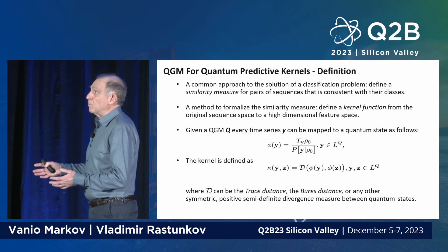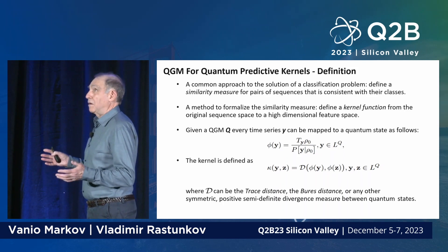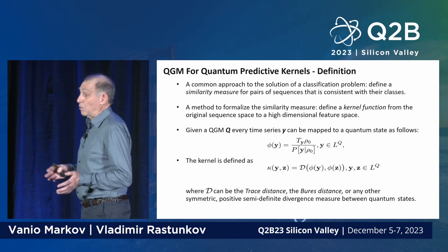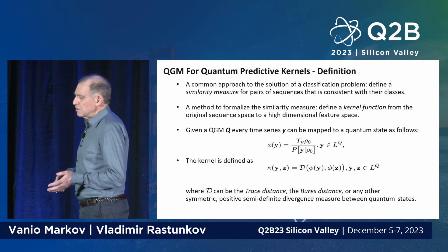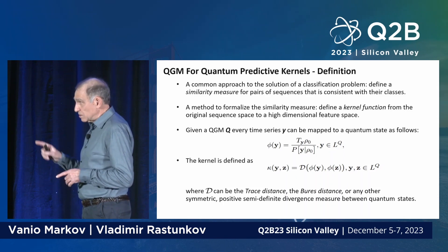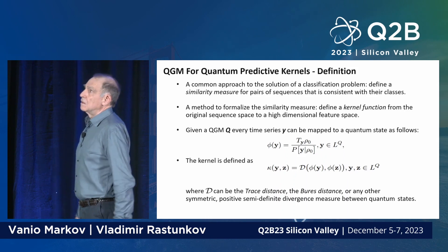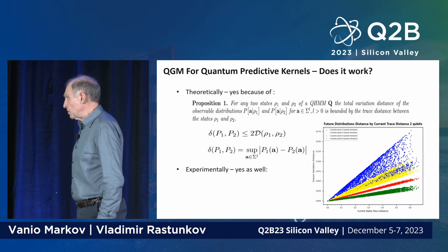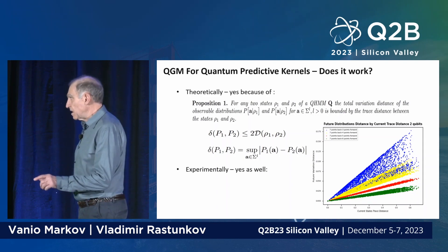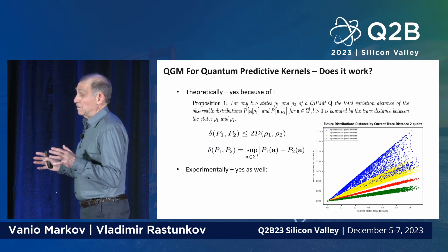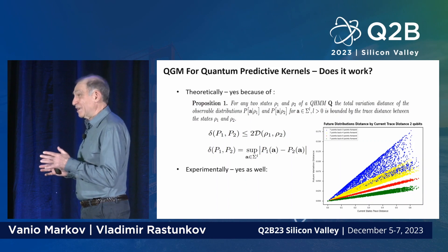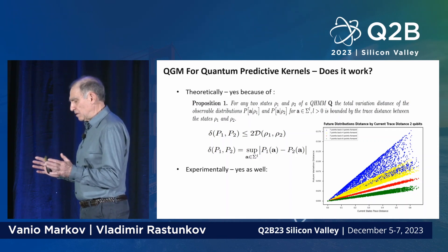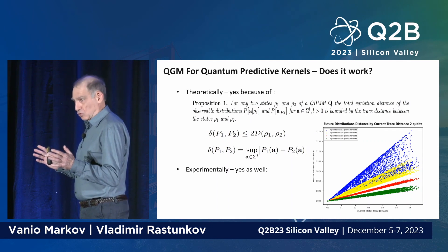The next step is applying everything to build a machine learning system. One approach is to use the generative models we developed to build quantum kernels — or kernels based on the generative models. The goal of kernels is to measure the distance between two sequences. We measure the distance between two sequences through the distance between the states they have generated. We have theoretical proof and experimental results showing that with increasing distance between states, the future behavior of the process also diverges. This is exactly what we want: close states imply similar futures, while distant states imply very different futures — enabling proper prediction.